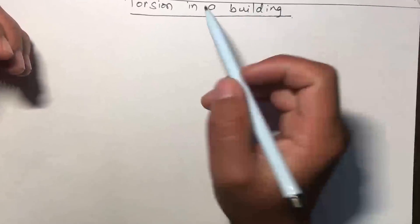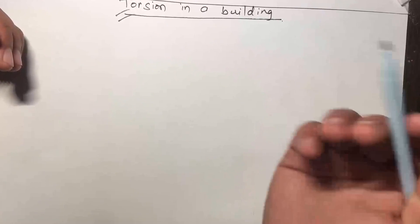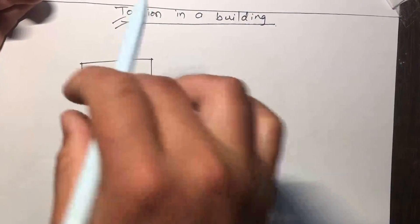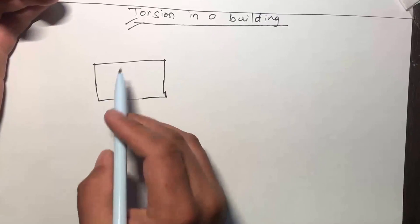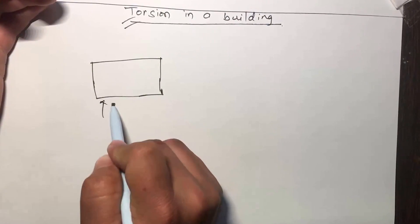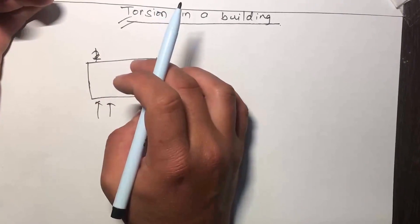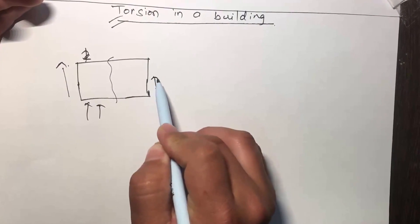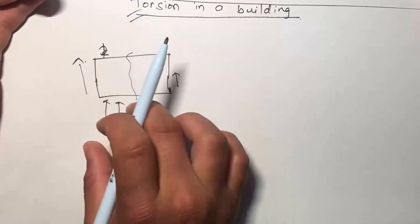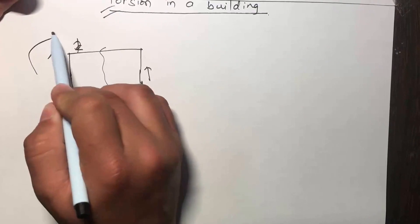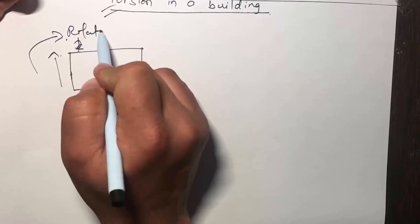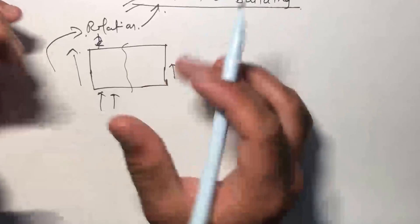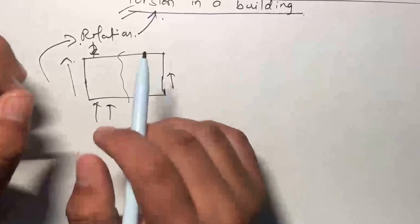Welcome to Engineering Academy. In this video, I'll be talking about torsion in a building. Let's assume we have a building — this is the top view or plan of the building — and it is acted upon by a lateral load. Due to this lateral load, one part of the building deflects more compared to the other part, causing the building to undergo a rotation. This rotation is what we call torsion. Simply put, torsion in a building is the rotation of the building due to unequal displacement of its parts.